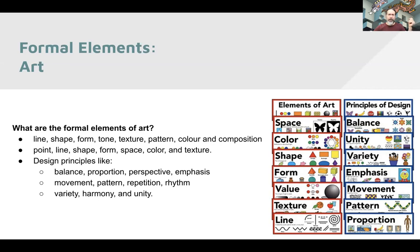There are also design principles, which are used to decide how to apply those formal elements. Those are things like balance, proportion, perspective, emphasis, movement, pattern, repetition, rhythm, variety, harmony, and unity. Some of those things start to sound like patterns, and some start to be functional and could be considered functional elements of art.